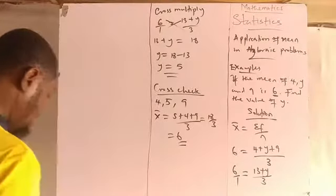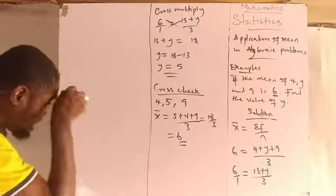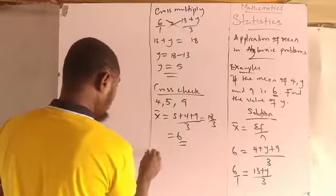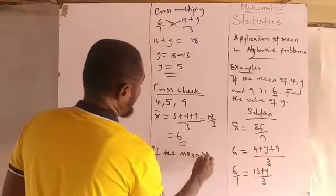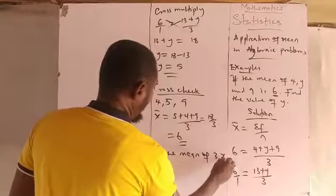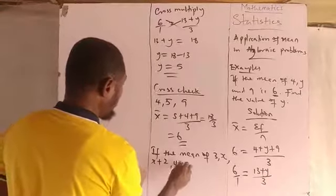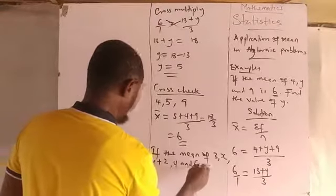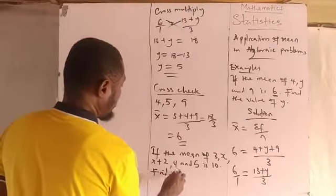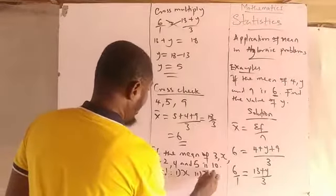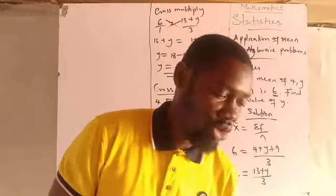Let's look at another example to help us understand better before you try some yourself. If the mean of 3x, x plus 2, 4, and 5 is 10, find x and x plus 2.